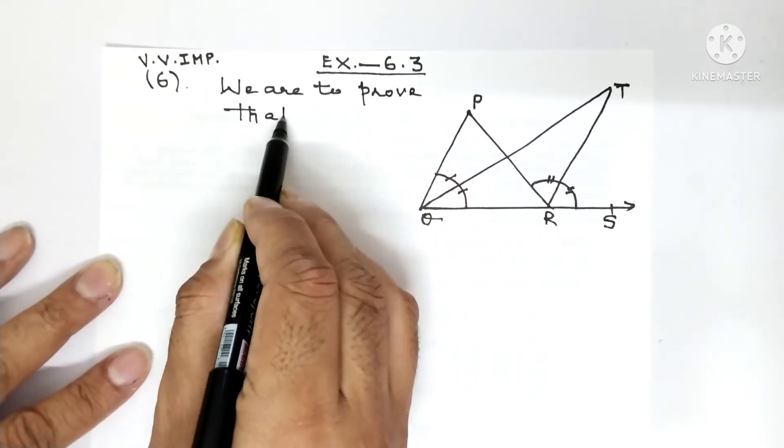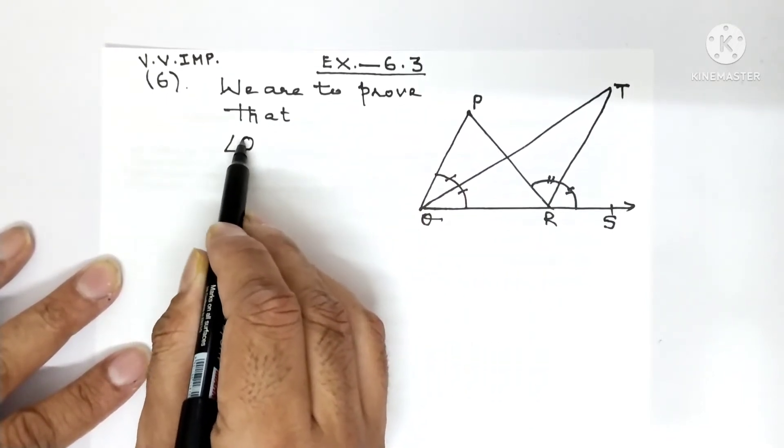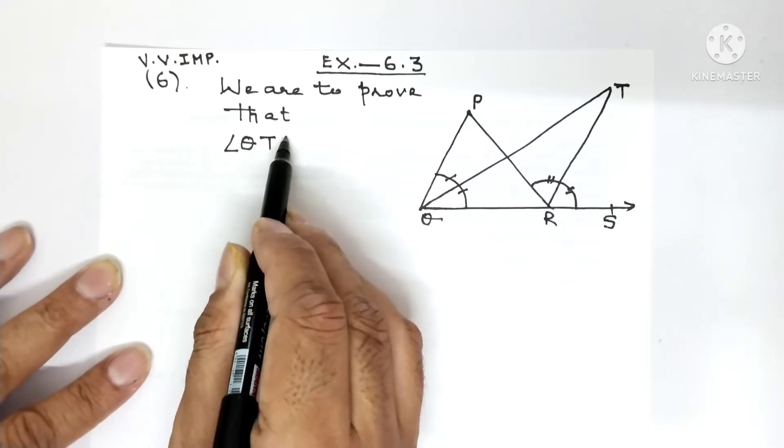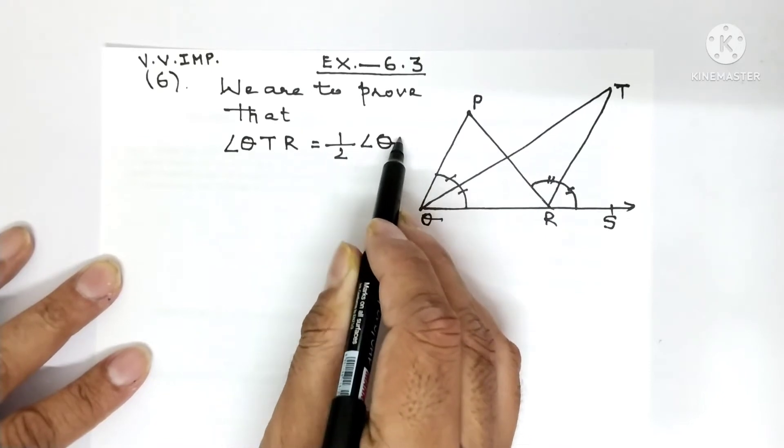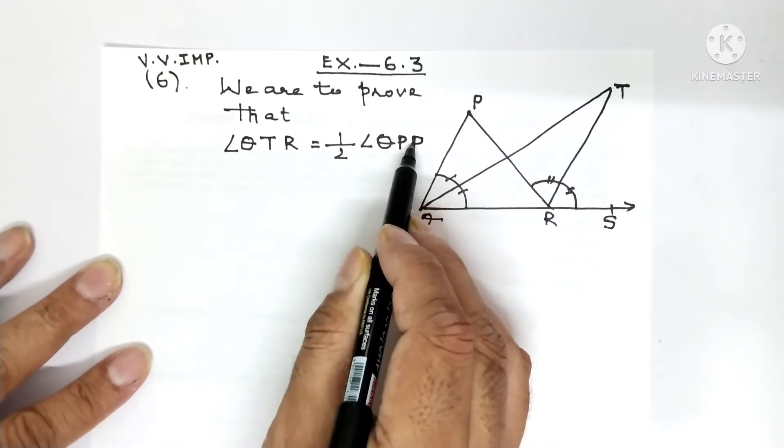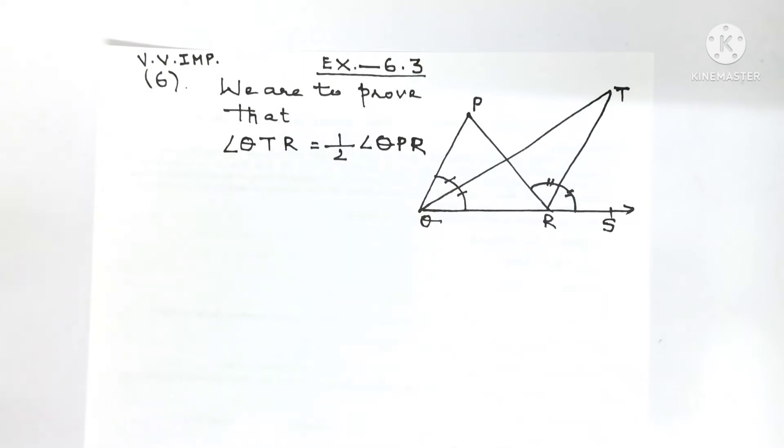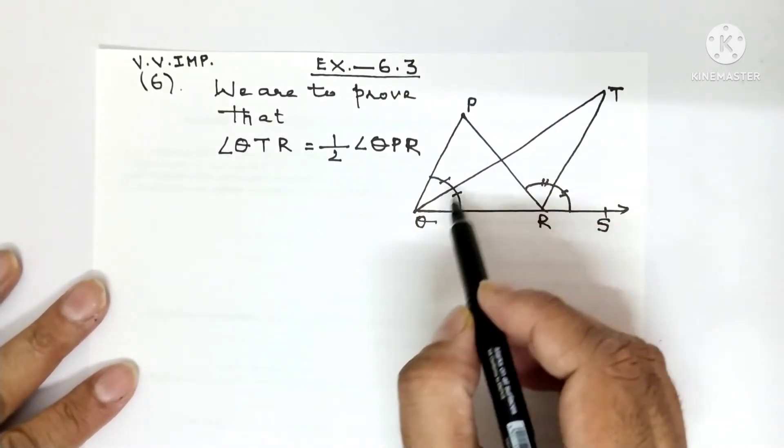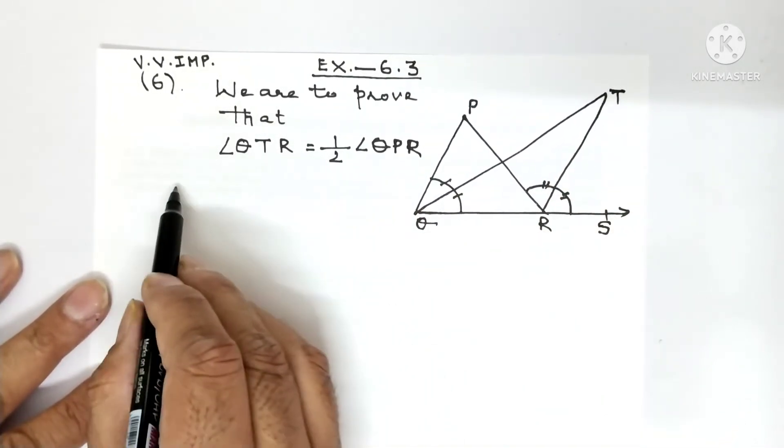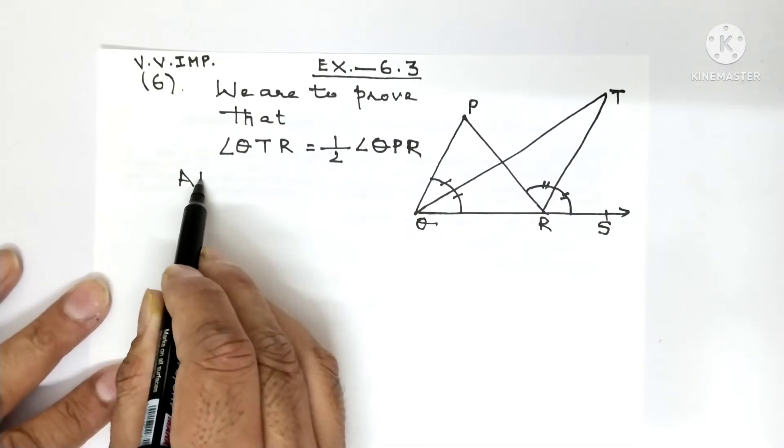Now in this question you have to mainly remember that the exterior angle sum property will be applied two times - in triangle PQR and in triangle QTR. So let me first apply it in QTR.